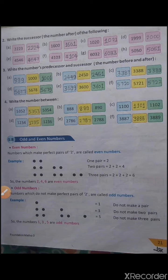Look at F. In F, the predecessor of 5721 is 5720 and the successor of 5721 is 5722.